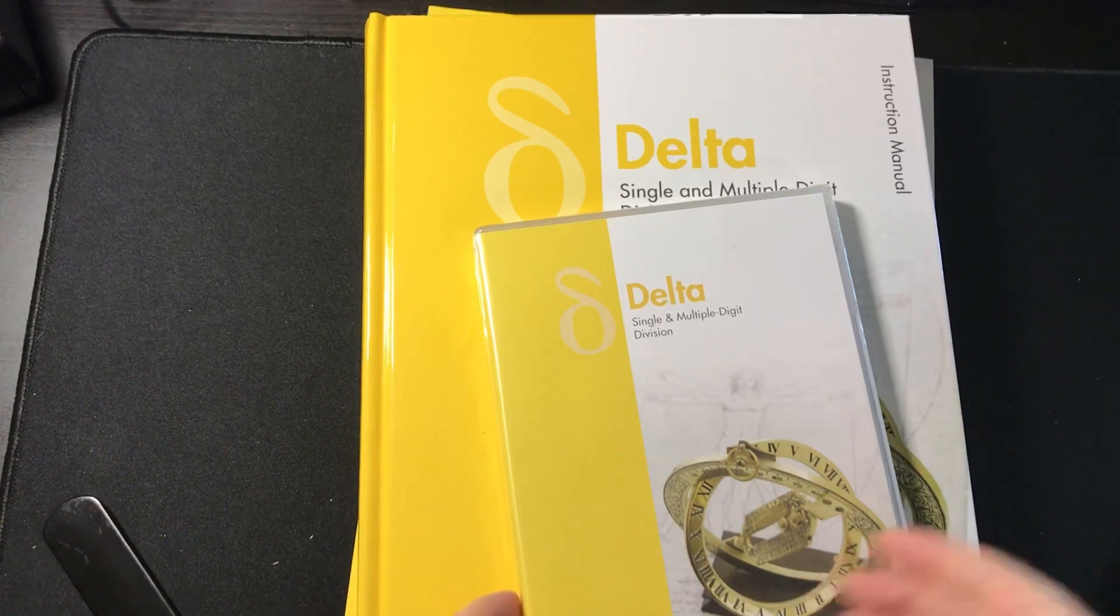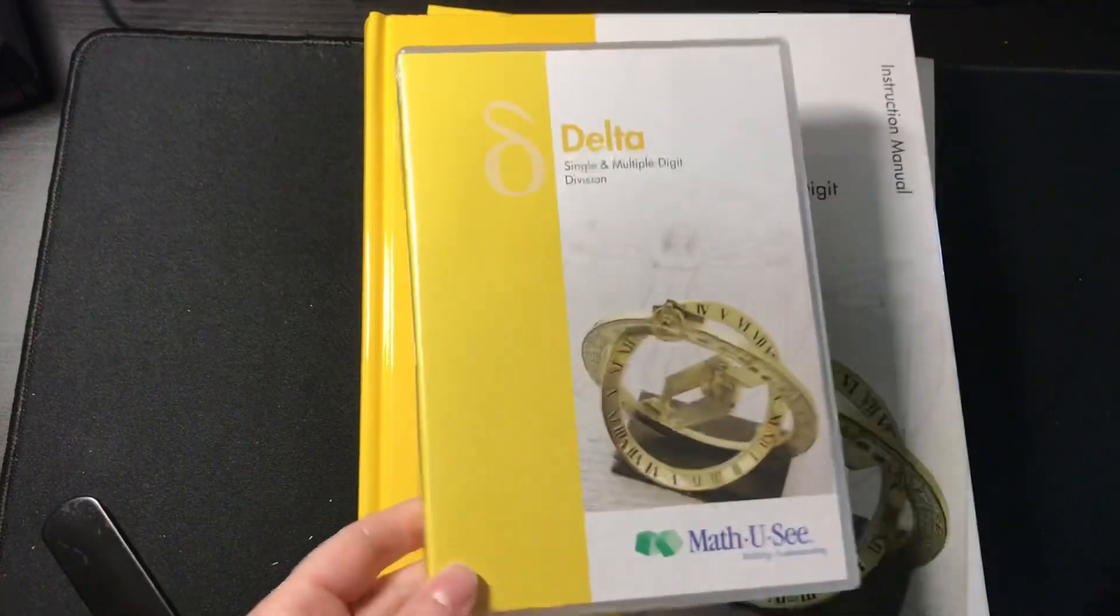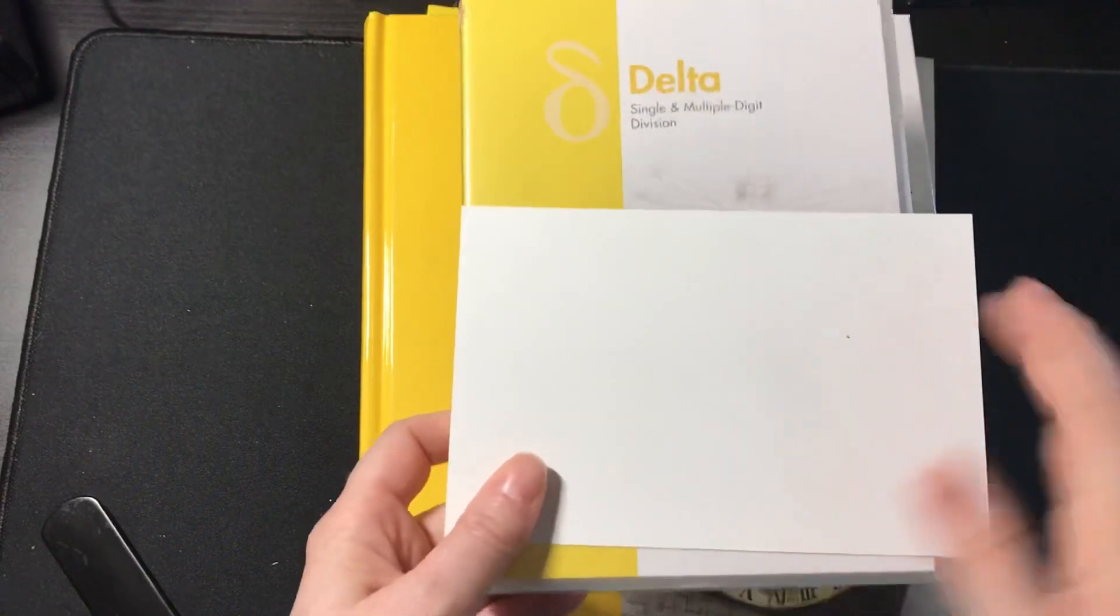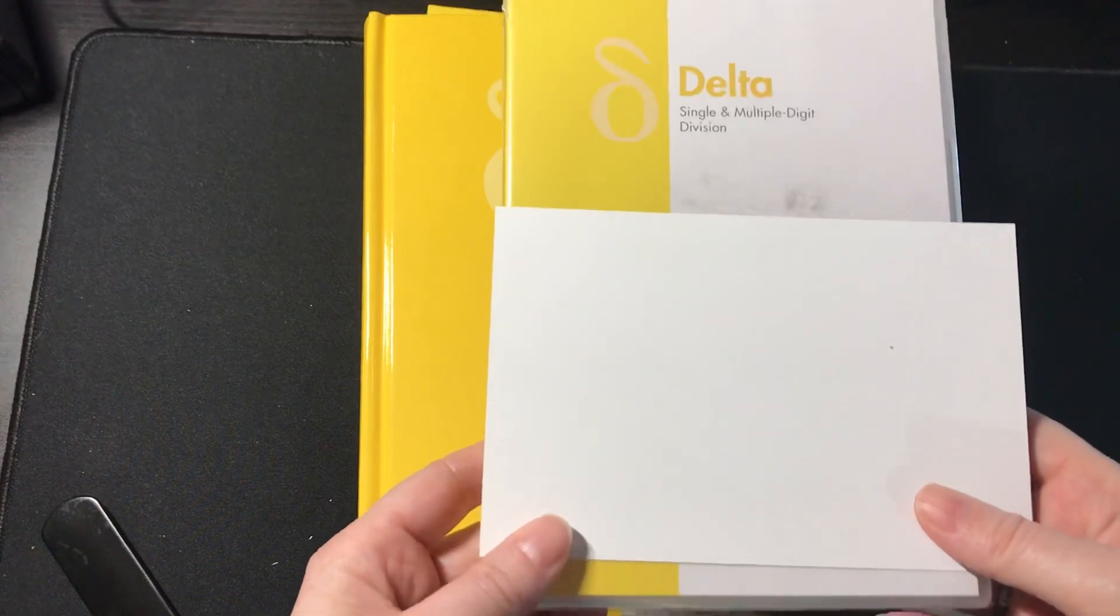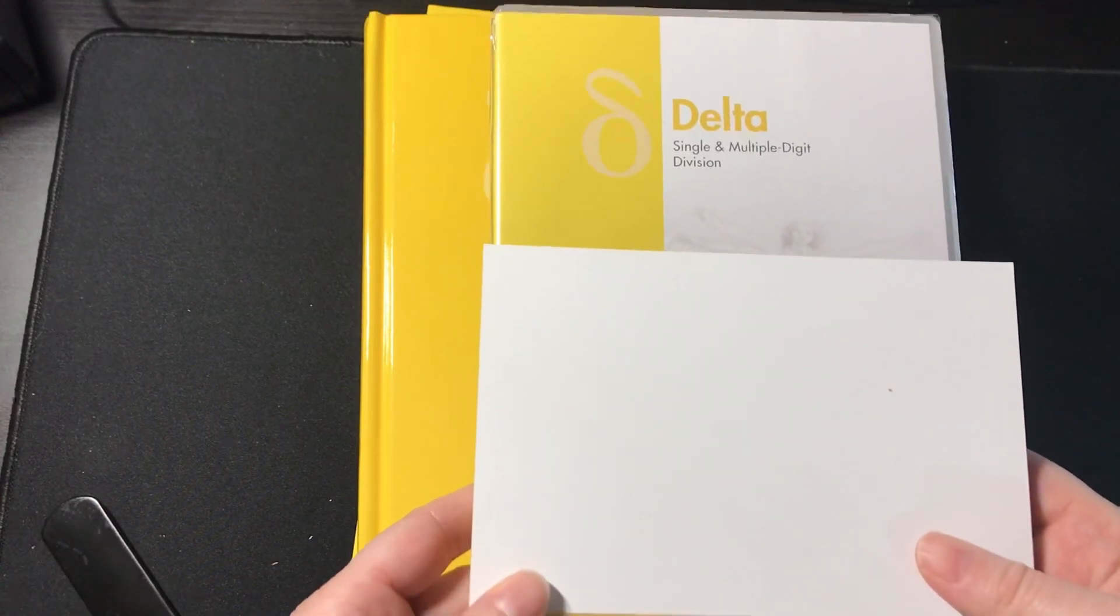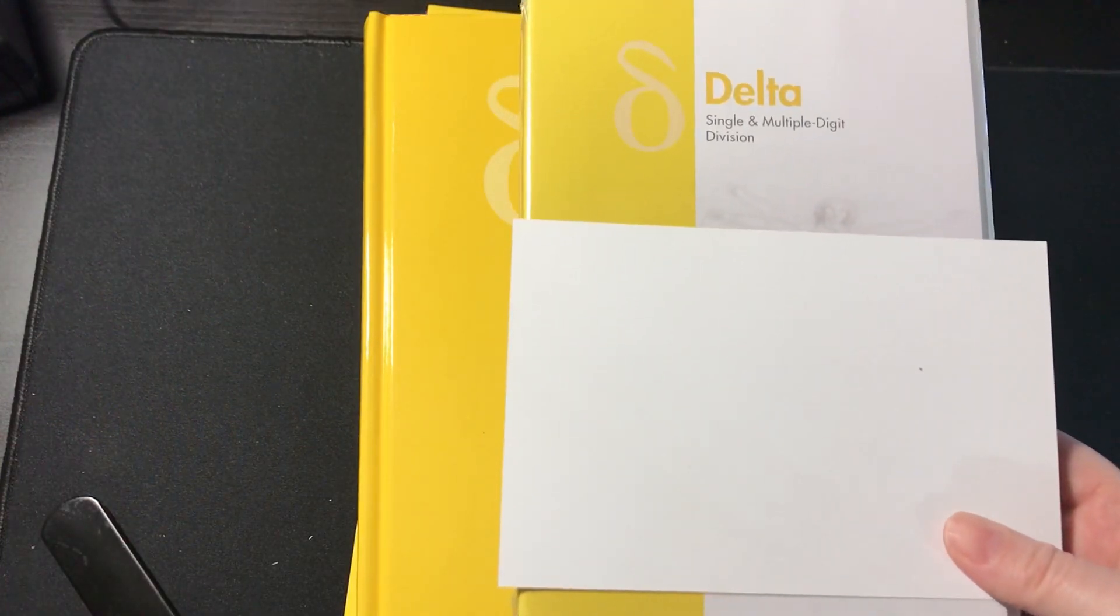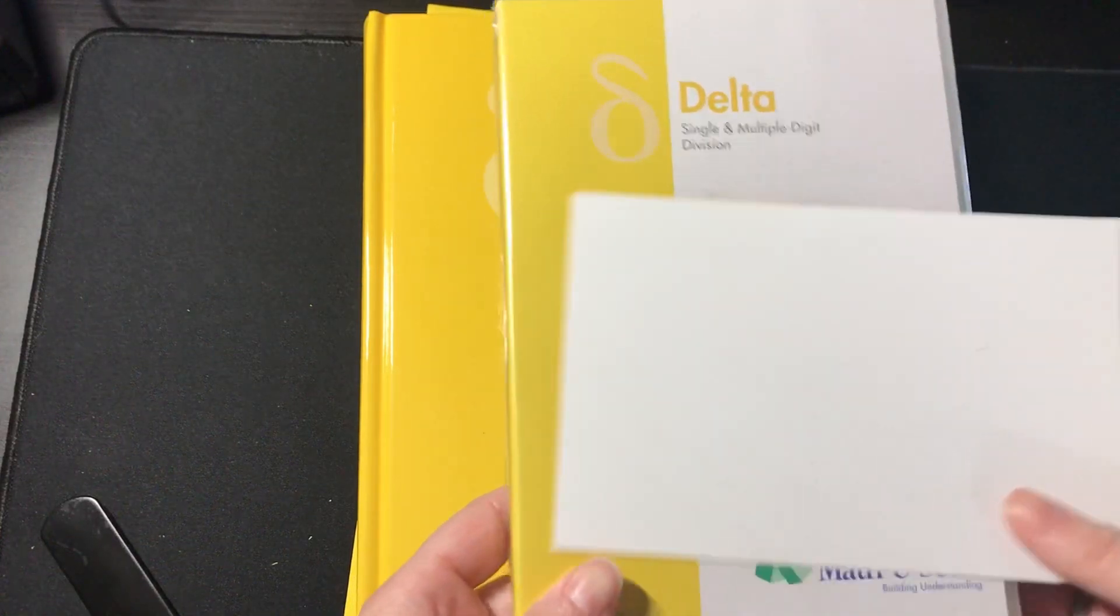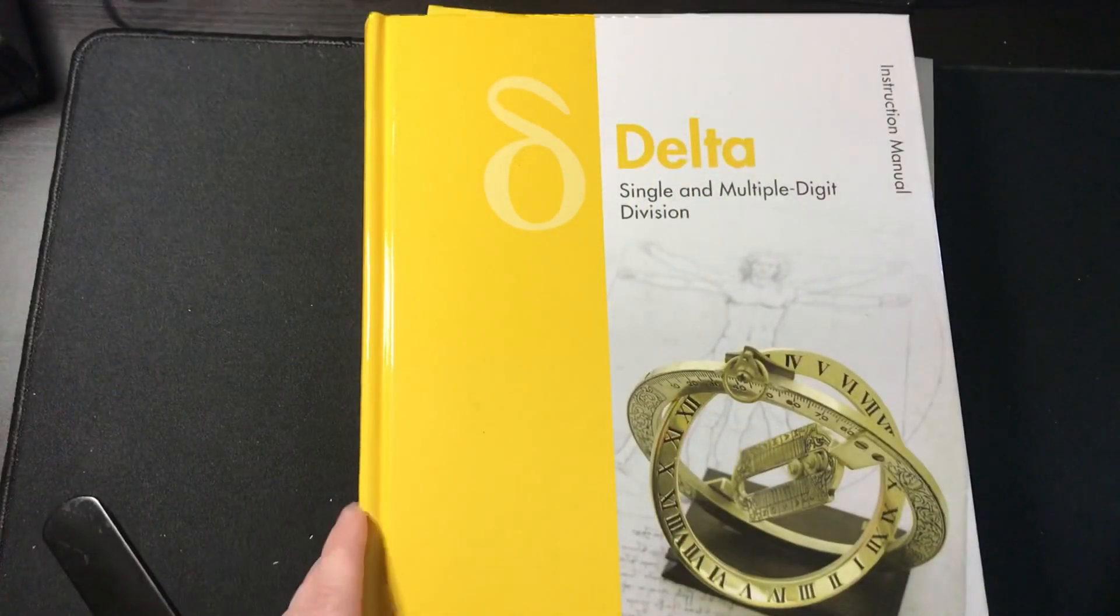Now this pack comes with the instructional DVDs. I didn't open this because there's really nothing to see. It also comes with a code for the digital pack. You can also purchase just the digital pack separately, which is actually what I did this year with Gamma. I just purchased the digital pack because I had found the workbook at a thrift store and I actually much prefer the digital pack to the DVD. So we may not even ever actually use the DVD, but it did come with a set.